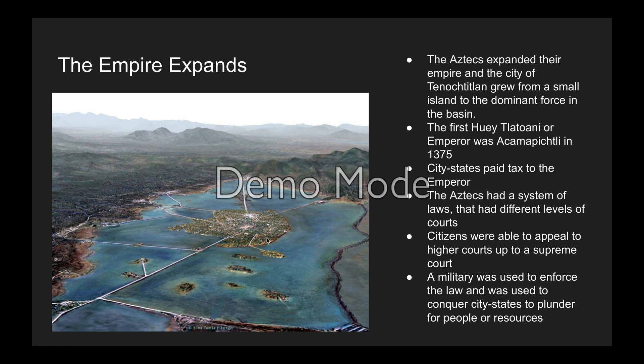The empire extended — starting as a small island, they kept adding land, created causeways, and separated fresh water from salt water, becoming a dominant force in the basin. Their first Huey Tlatoani, or emperor, was Acamapichtli in 1375. City-states paid tax to the emperor. The Aztecs had a system of laws with courts, including a Supreme Court you could appeal to. Military was used to enforce the law and also to conquer city-states to plunder for people and resources.